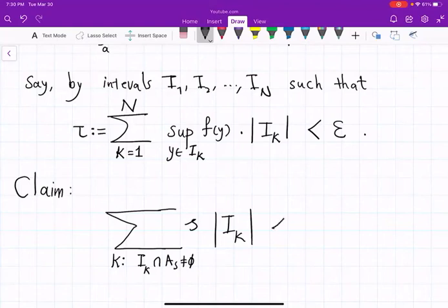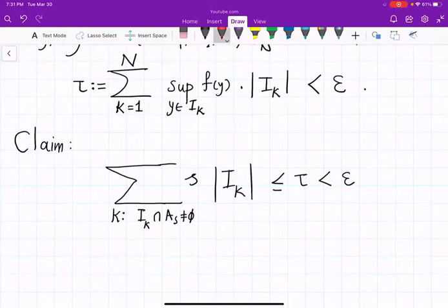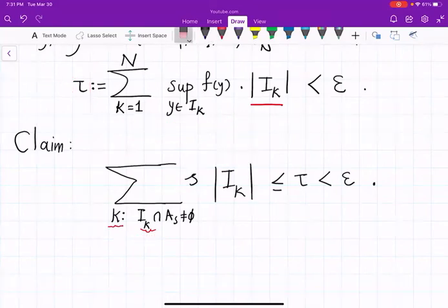So my claim is that this is at most eta, so in particular it's less than epsilon. And why is this the case? If you are in a set I_k which has some points from A_s, then the supremum up here for such intervals is at least s, because I know at least there is one point where f(y) is at least equal to s. So it could be larger, but definitely will not be smaller. So this supremum is always bigger than s, and I_k part is just I_k part, and also I'm doing summation over fewer k. So that's why this quantity is less than the quantity for eta, and that's the proof. So this is the claim, and the proof we didn't write down, but I hope you are convinced.